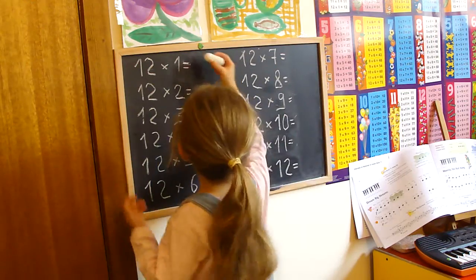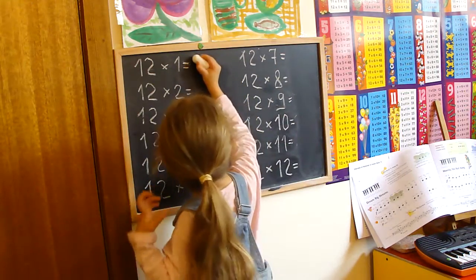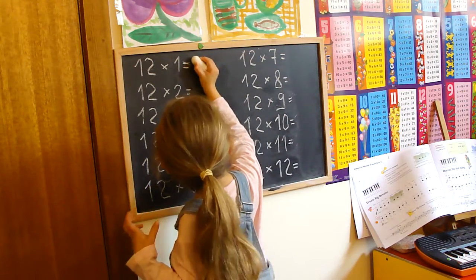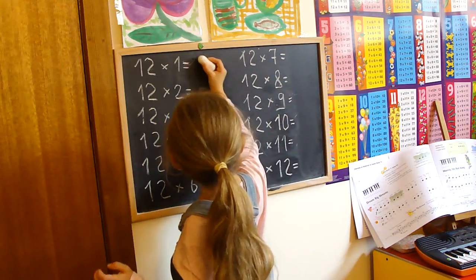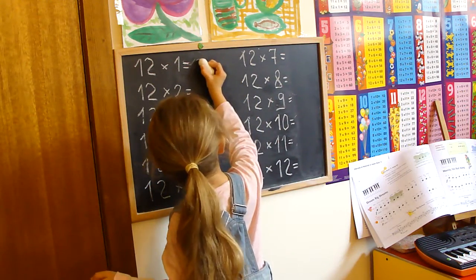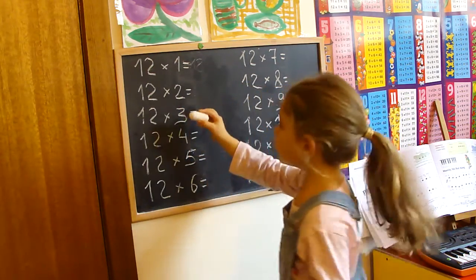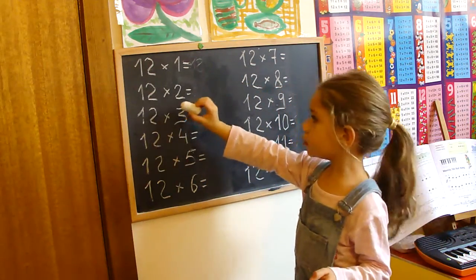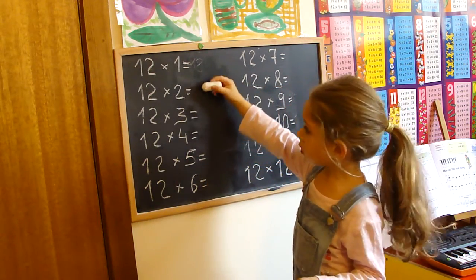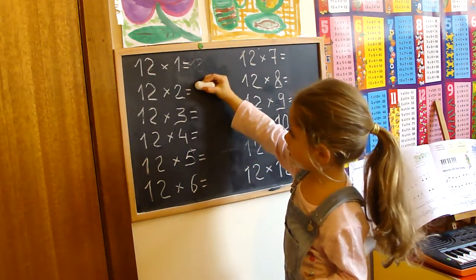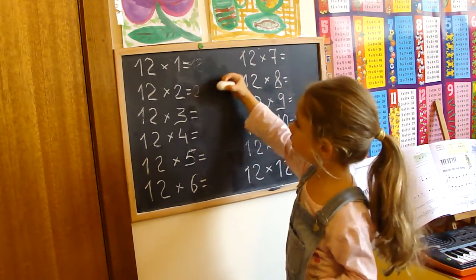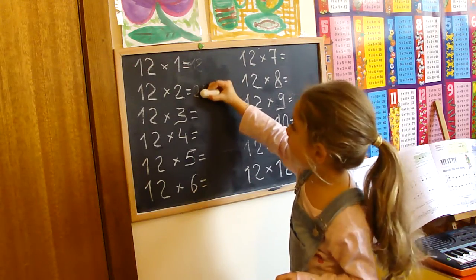Twelve times one, it's twelve. Twelve times two, twenty-four.